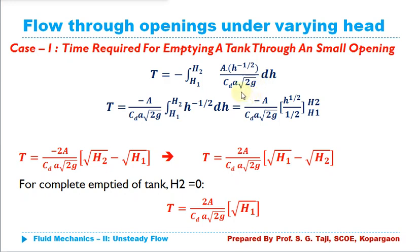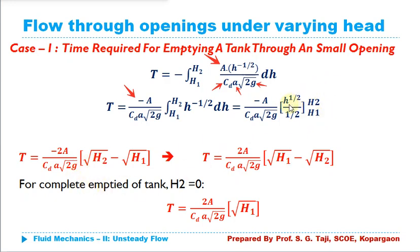Taking constant terms outside the integral — area A, coefficient of discharge CD, area of opening a, and √(2g) are all constant — we integrate H^(-1/2). Adding 1 to the power gives H^(1/2), divided by the new power 1/2, applying limits from H1 to H2. Taking the denominator 2 as numerator and applying upper minus lower limit gives: T = -2A(√H2 - √H1) / (CD × a × √(2g)). Taking the minus sign common gives a positive result.